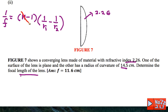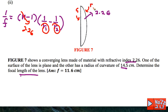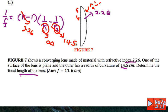Here n is 2.26. For R1, this is the plane surface, so R1 is infinity. For R2, this is the concave surface, so R2 is negative, and the radius of curvature is 14.5, meaning R2 equals negative 14.5. Substituting these values, the focal length works out to 11.6 centimeters.